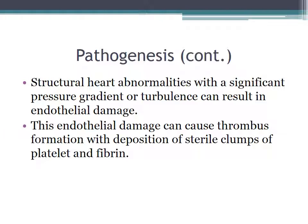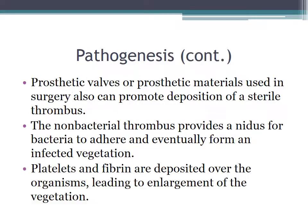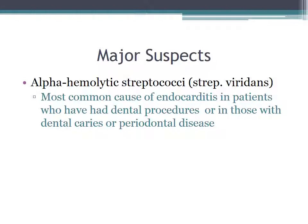So how does that take place? Structural heart abnormalities with a significant pressure gradient or turbulence can result in endothelial damage, and this endothelial damage can cause thrombus formation with deposition of sterile clumps of platelet and fibrin. Prosthetic valves or prosthetic materials used in surgery also can promote deposition of a sterile thrombus. The non-bacterial thrombus provides a nidus for bacteria to adhere and eventually forms infected vegetation. Platelets and fibrin are deposited over the organisms, leading to enlargement of the vegetation.